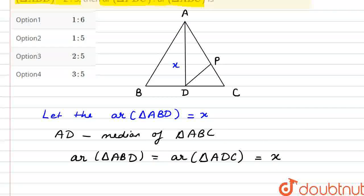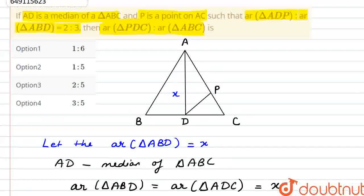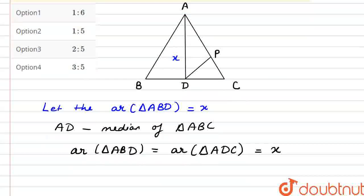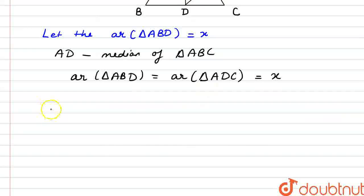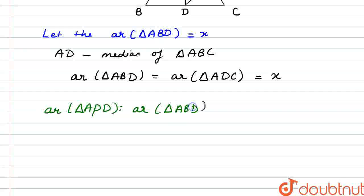Now, what are we given in the question? We have the ratio given for area of triangle ADP to ABD. So in the question, we have given that area of triangle ADP to ABD is 2:3.